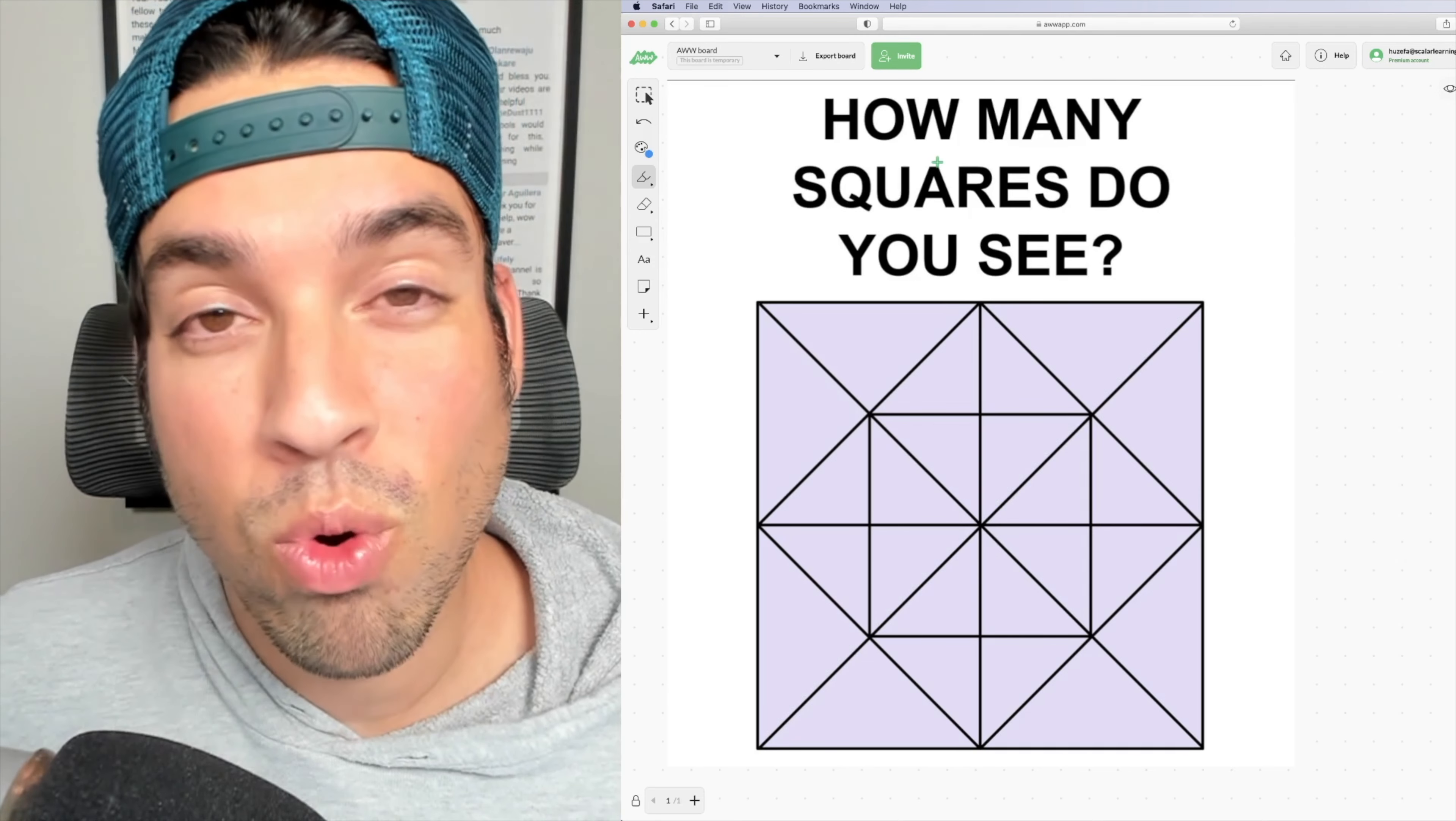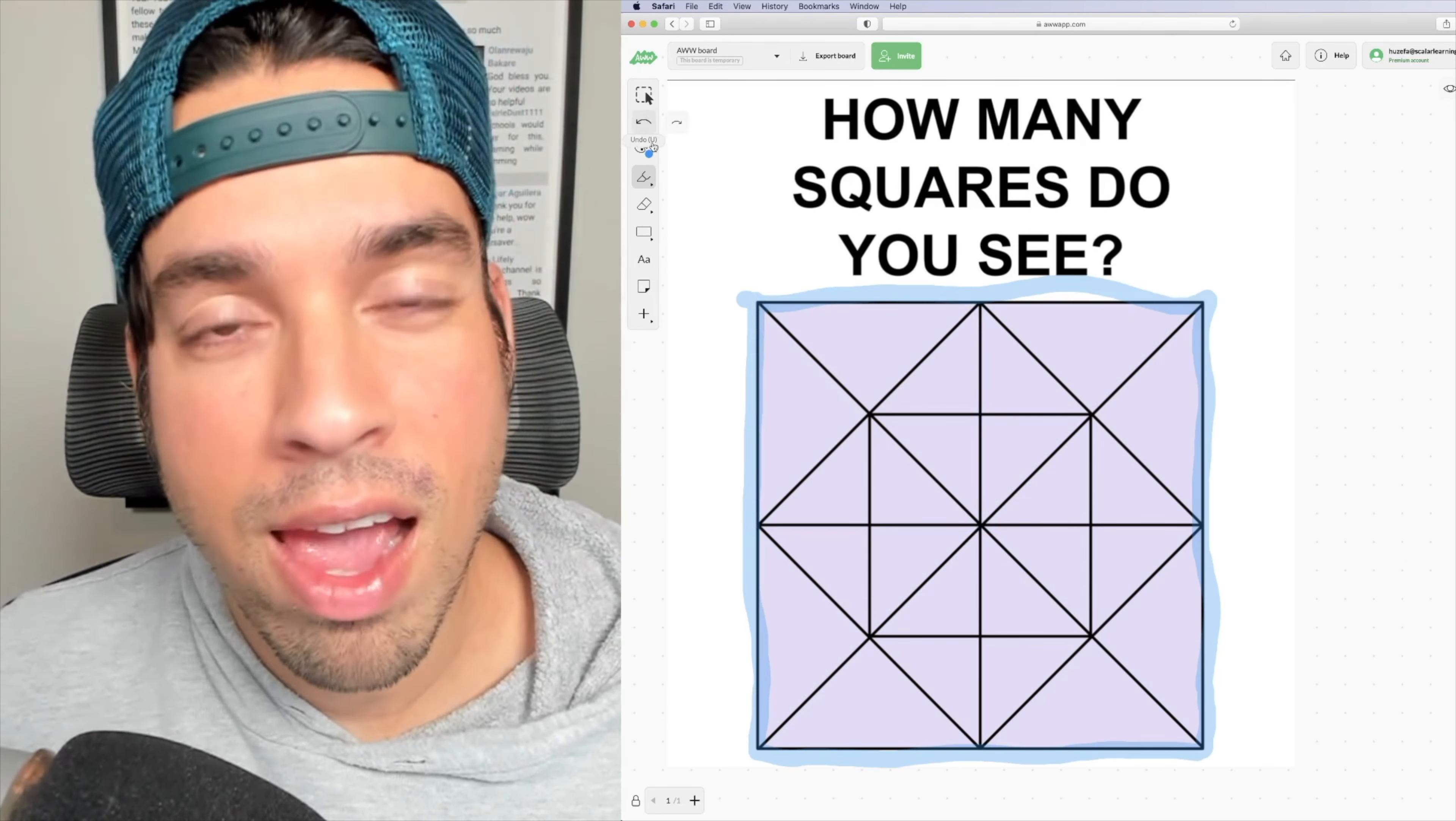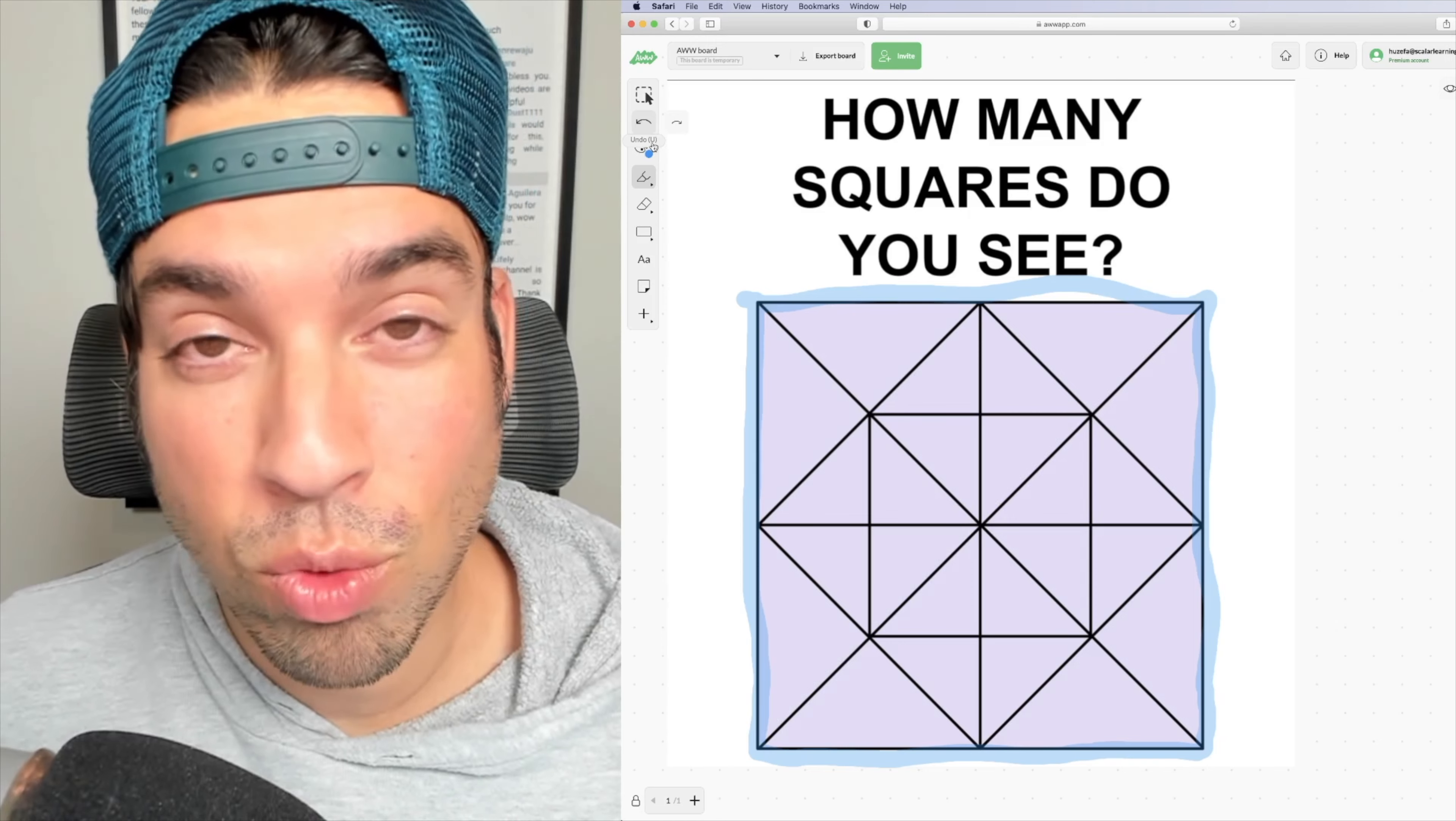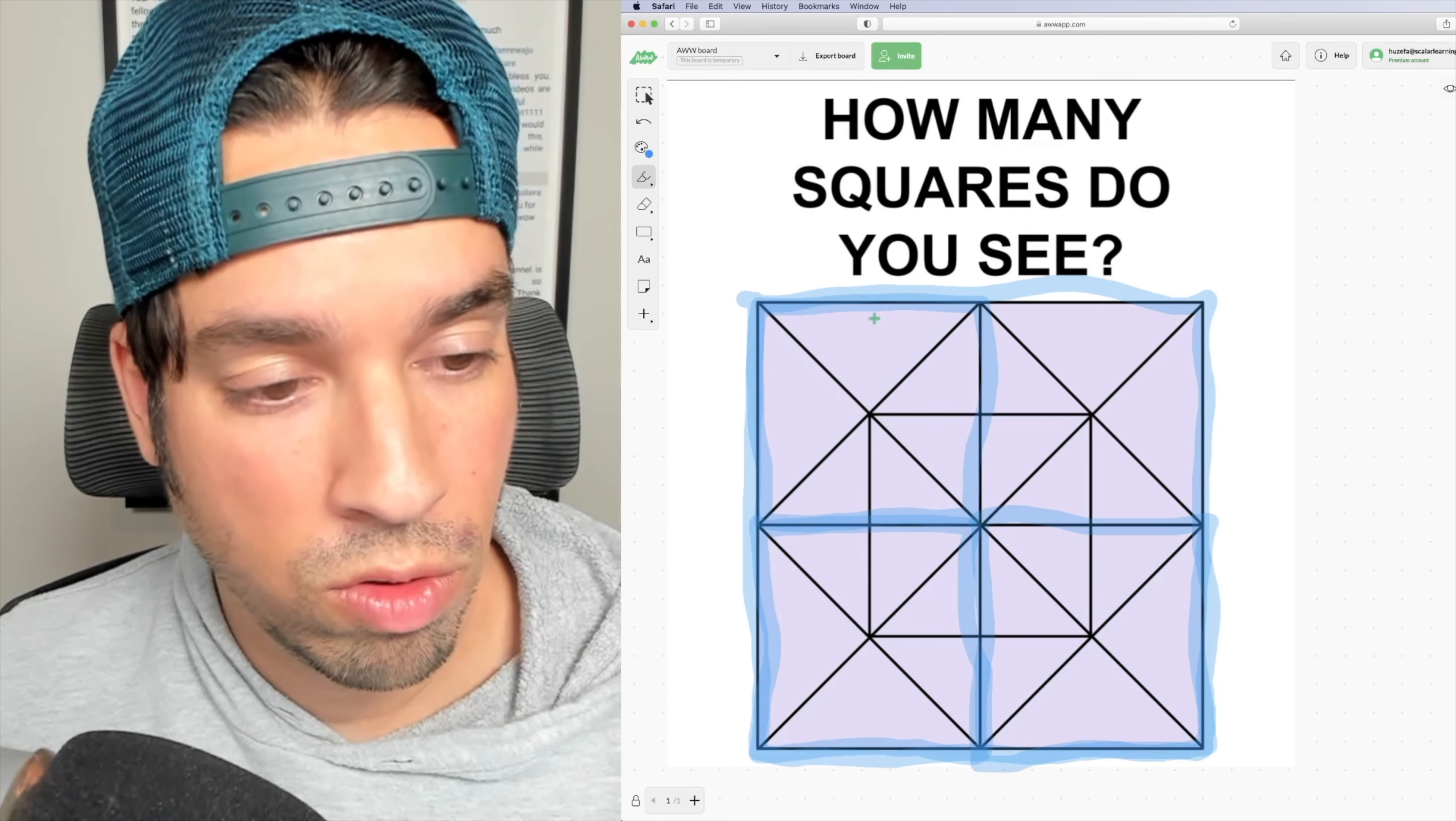The first thing I see of course is the gigantic square. After that, I see these kinds of medium sized squares, one, two, three, and four.